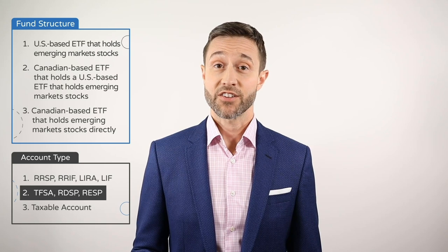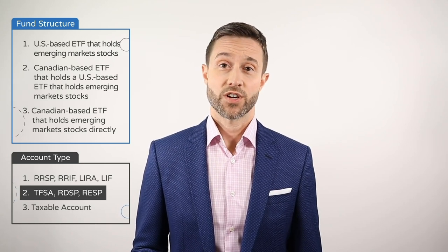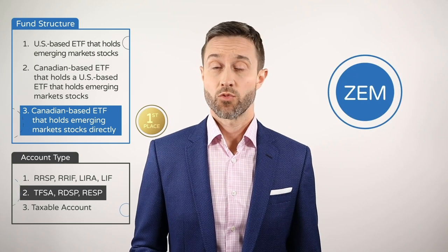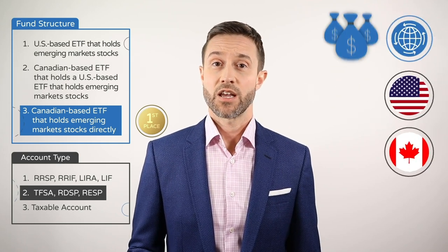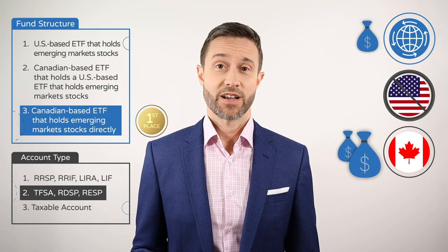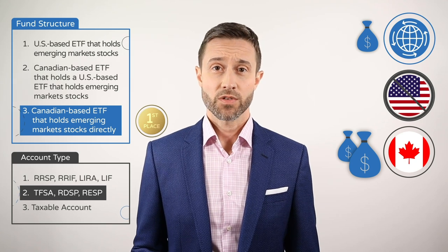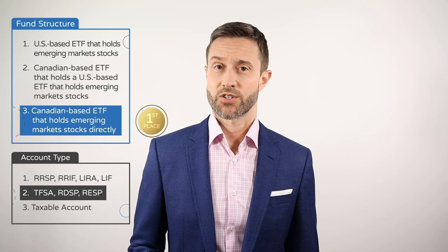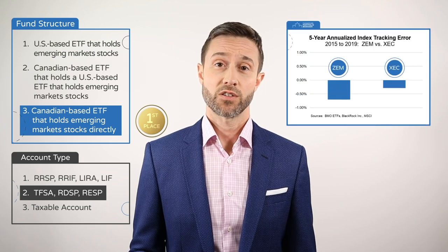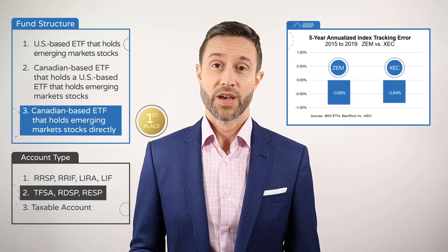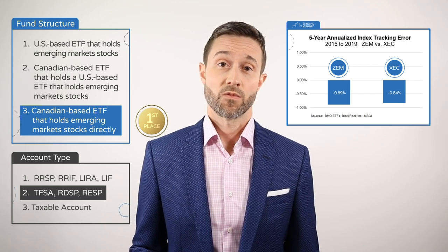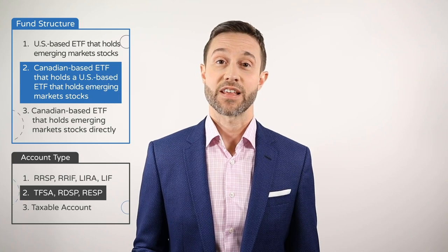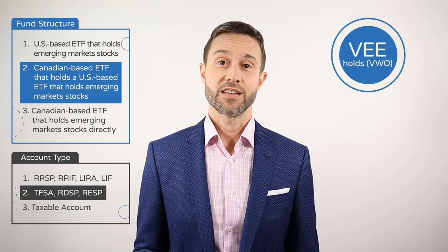In TFSA, RDSP, and RESP accounts, the most tax-efficient fund structure is a Canadian-based ETF like ZEM, which holds the emerging markets stocks directly, resulting in only one layer of withholding taxes, while other structures will have two layers. However, this structure generates other indirect costs. While ZEM's structure is arguably the most tax-efficient from a withholding tax perspective, that doesn't mean it's optimal when all costs are considered. In the past, it has struggled to closely track its index, offsetting most of the benefits from its more tax-efficient structure. For this reason, I still recommend sticking with a Canadian-based ETF that holds a US-based ETF, like VEE or XEC.